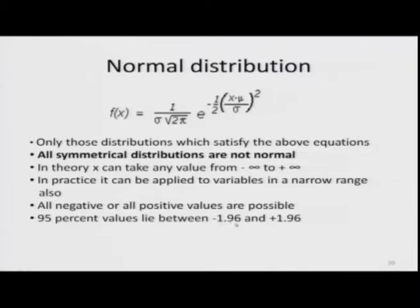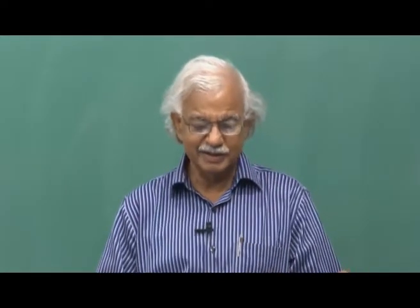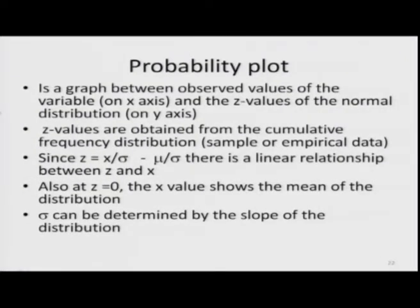Between −1.96σ and +1.96σ when sigma differs from 1, we will need the mean and standard deviation of empirical data. The normal is a two-parameter family of distributions and there are specific tests to check the normality of data. Researchers are often worried about whether the normal distribution fits the data or not. The methods can be the probability plot, Gary's test, chi-square, or the Kolmogorov-Smirnov test. The probability plot is a graph between observed values of the variable on the x-axis and the z-values of the normal distribution on the y-axis.